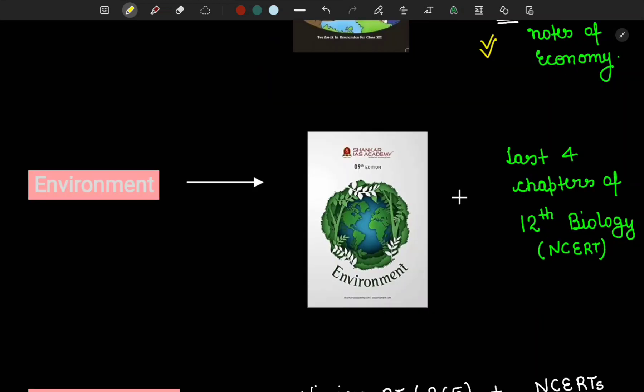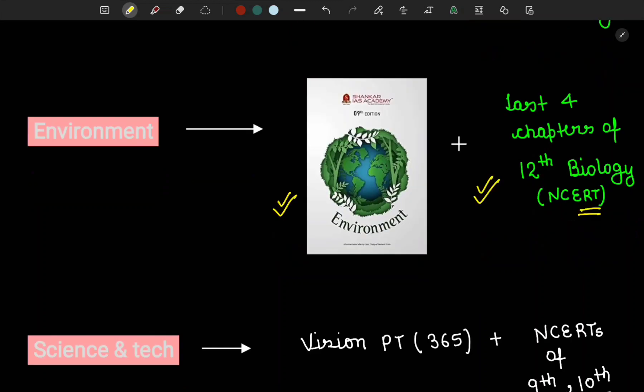Our next subject is environment. There is a book called Shankar IAS for environment. Some people follow PMF IAS but personally I haven't read it so I won't comment on that. I have only read Shankar IAS. Along with this, follow the last four chapters of 12th Biology NCERT. The last four chapters are basically about environment covering topics like commensalism, amensalism and their examples. You also have to study Monthly Interface which you can follow from Vision or any coaching institute.